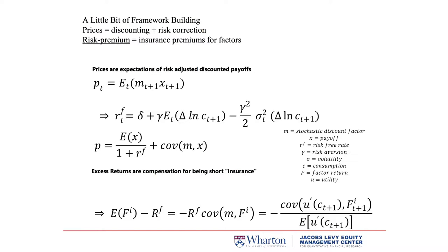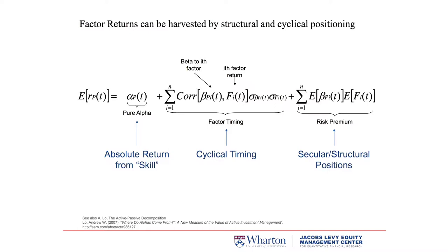The first equation is that the price P(t) is the expectation of the payoff discounted by the stochastic discount factor M. If you assume log-normal distribution with simple CRRA utility with risk aversion gamma, you get the risk-free rate equal to a subjective discount factor term delta, plus risk aversion times consumption change delta-log-C, plus a convexity term. So if risk aversion is high, rates will be high; if consumption growth is high, rates will be high; uncertainty also contributes but in the other direction.